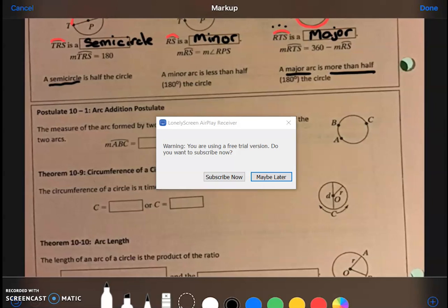Postulate 10-1 here: this is kind of just common sense. This is arc addition. Basically, we're just going to add two arcs. We're going to add the green arc plus the red arc, which equals the entire arc from here to here. It's just common sense: arc ABC is arc AB (with that little rainbow above it) plus arc BC.